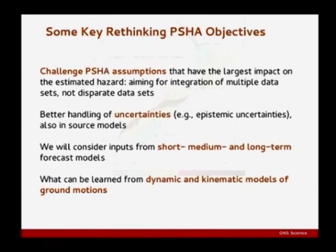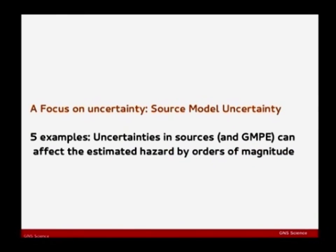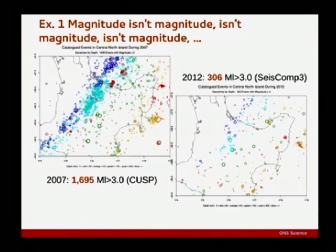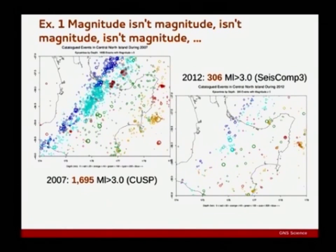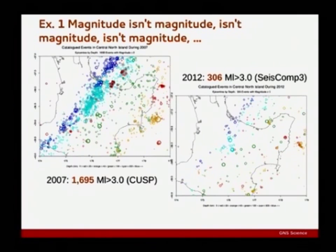Focusing on source model uncertainties: magnitude is a tricky beast, and particularly important because we have to go from source models forecasting rates of events in some magnitude range to ground motion prediction equations forecasting ground motions based on a particular magnitude — and trying to get those two to meet up is tricky. Say you use one magnitude metric in the source model and another in the GMPE with just a 0.2 magnitude offset — you wouldn't think that a big deal, but that's about a doubling of the rates because of the Gutenberg-Richter power law, which then leads to about a 20 to 30 percent change in hazard. Small changes in magnitude can be important for the ultimate hazard.